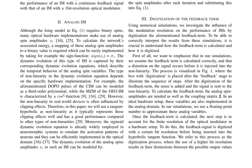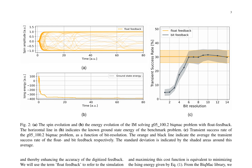The digitization of the feedback term is also investigated, where the feedback term is calculated correctly and a distortion on the signal occurs before it is injected into the non-linearity. This process is visualized in Figure 1, where the digitization box is placed after the feedback stage to illustrate the sequence of steps. In the Ising machine, the digitization of feedback significantly impacts performance. To study this, the authors introduce float feedback and bit feedback concepts.